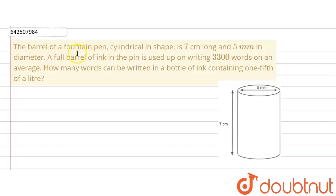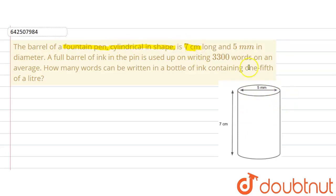The given question says that the barrel of a fountain pen is cylindrical in shape. The length of the barrel is 7 cm and the diameter is 5 mm.